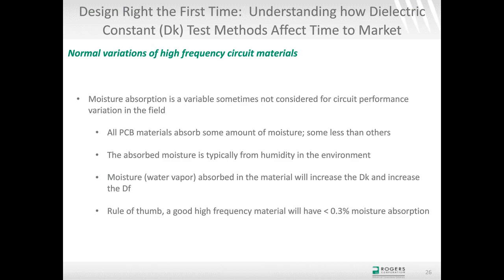Moisture absorption is an important issue. All materials absorb some moisture, and as a circuit absorbs water vapor from humidity, dielectric constant increases and dissipation factor increases. A rule of thumb is moisture absorption of 0.3% or less is considered good, but as I'll show, even 0.3% can be problematic for some applications — it may need to be even lower.